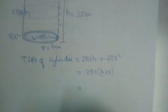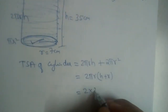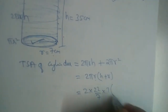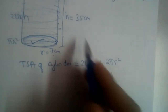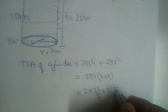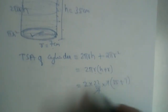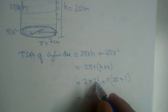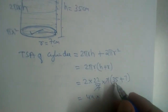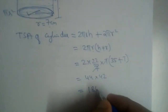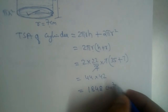Now let us substitute the values. Total surface area = 2 × (22/7) × r × (h + r). r is 7, h is 35. So: 2 × (22/7) × 7 × (35 + 7). The 7s cancel, giving 2 × 22 × 42 = 44 × 42 = 1848 cm².